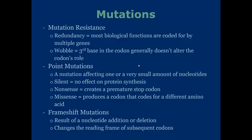Nonsense mutations create premature stop codons. If you remember the stop codons, they are UGA, UAA, and UAG. Missense mutations are codons that code for different amino acids. Obviously, this can create different protein functions.